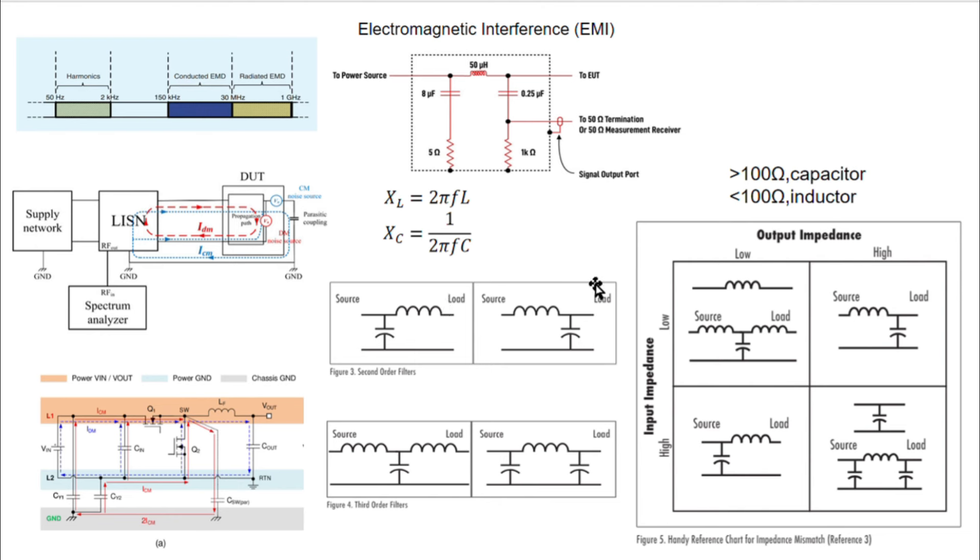A third-order filter has three passive elements. This type of filters are called pi or T filters. The problem of this filter is the physical size is bigger. But the third-order filter is the most popular filter.